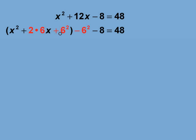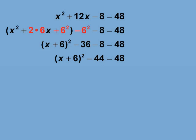By adding and subtracting a 6 squared term, we get a binomial squared, and simplify the numerical terms. Resulting in the quantity, x plus 6 squared, equal to 92.